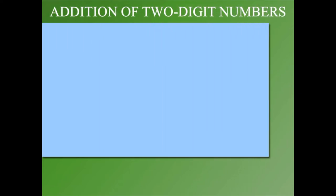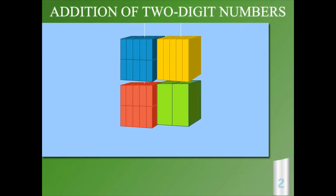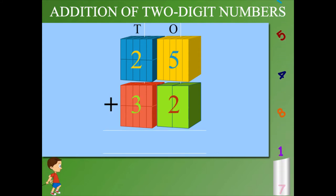Addition of two-digit numbers. Here are two numbers, 25 and 32. 25 has two tens and five ones. 32 has three tens and two ones.